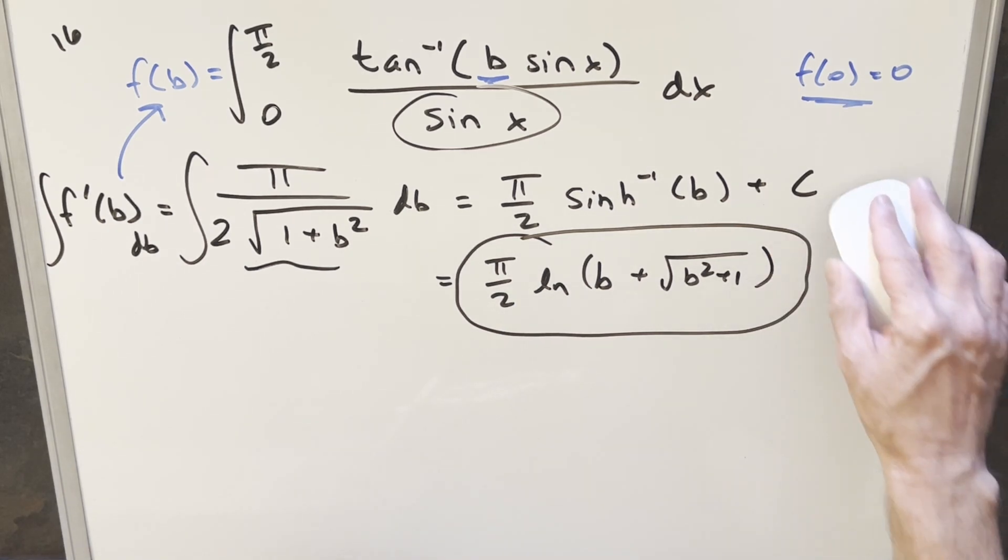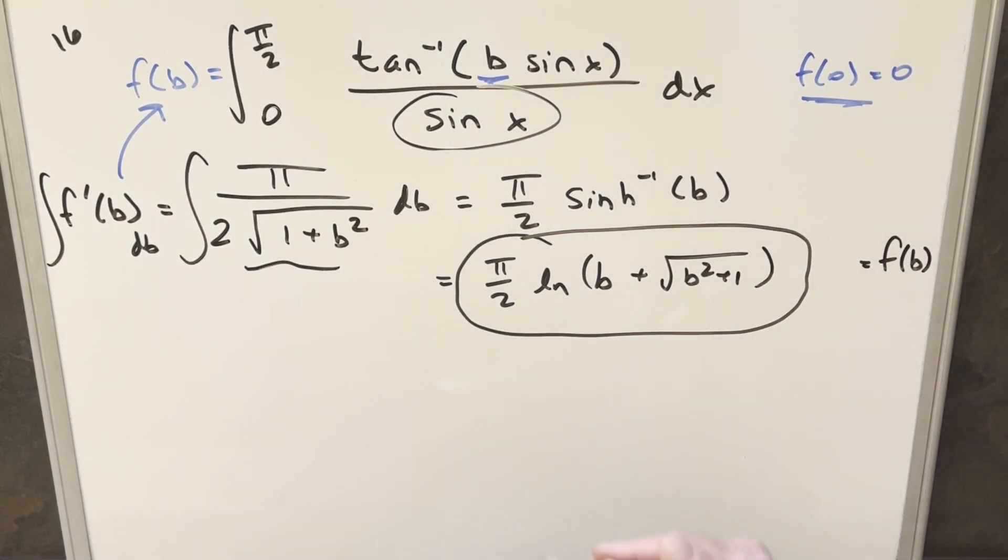We also could use the other one. Just getting rid of the c here will be 0 as well. And we could express this as pi over 2 inverse sinh of b. Okay, there you go. Good one from UK Integration B 2024. Thanks everyone for watching. Have a good day.